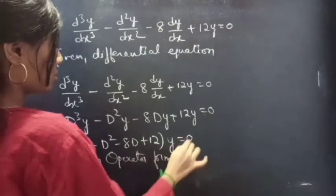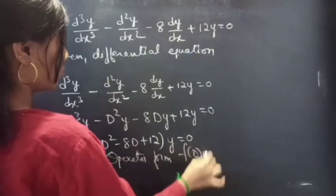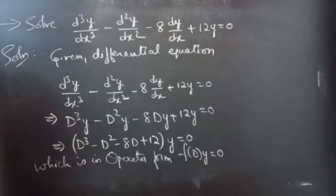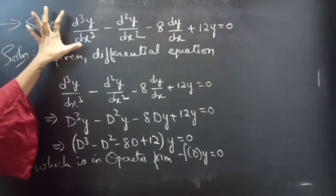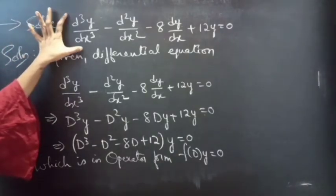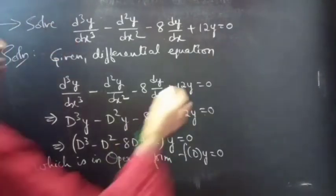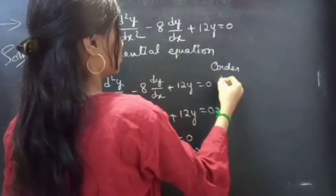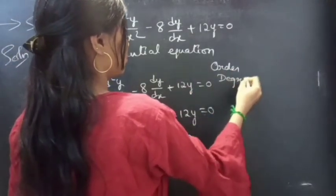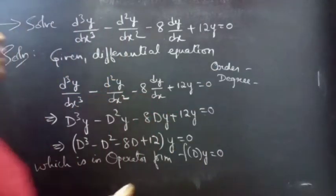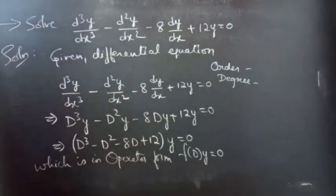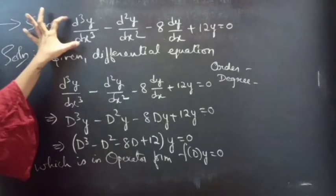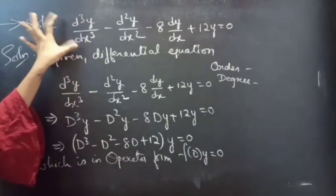That is f(D) into y equals to 0. If you notice, here we have the highest derivative D cube y by dx cube, so our order will be 3. Since the highest power of the highest derivative is 1, our degree will be 1.